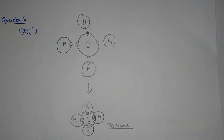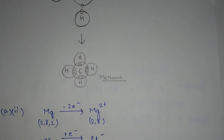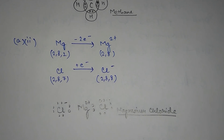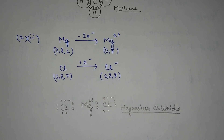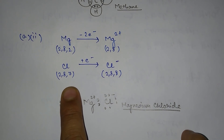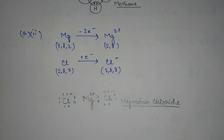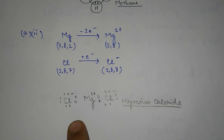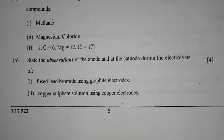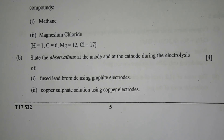For magnesium chloride, magnesium loses its 2 outermost electrons to form Mg2+ cation, whereas each of the chlorine atoms accepts 1 electron to form the chloride ion. The electron dot structure will be as shown.